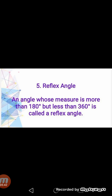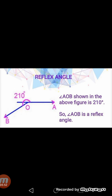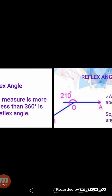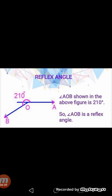Number five — Reflex angle. Angle AOB is a reflex angle. The reflex angle can be calculated if the measurement of the interior angle is given. A complete turn is equal to 360 degrees. To find a reflex angle, we subtract the interior angle from 360 degrees, and we can easily find the reflex angle.